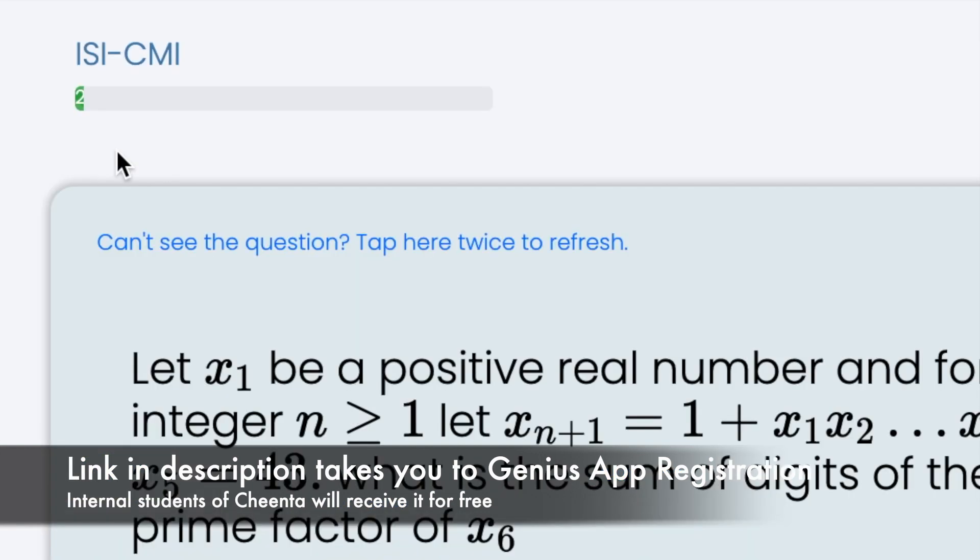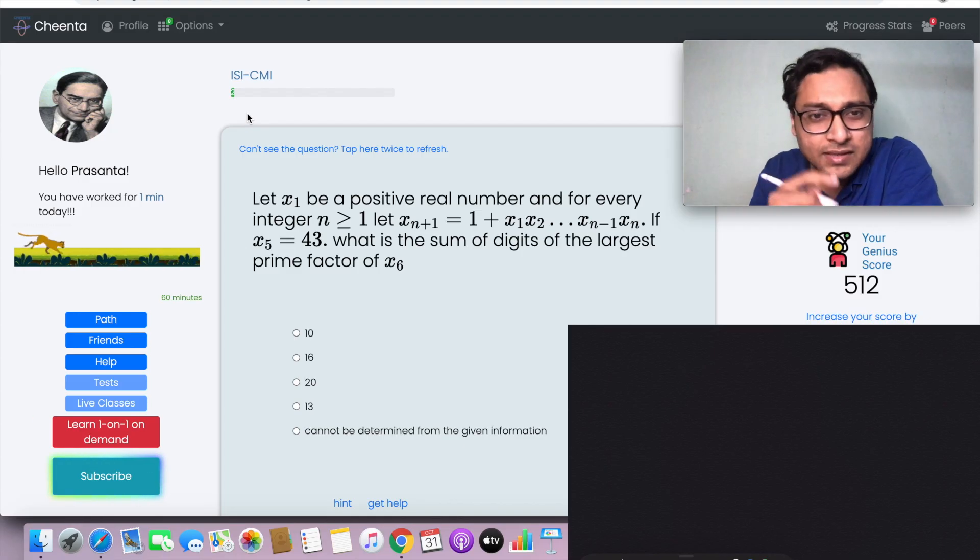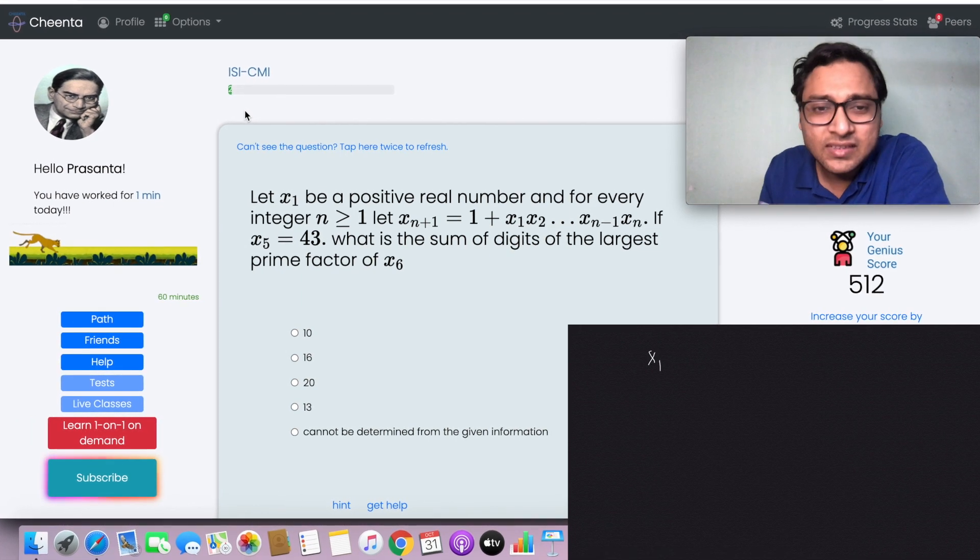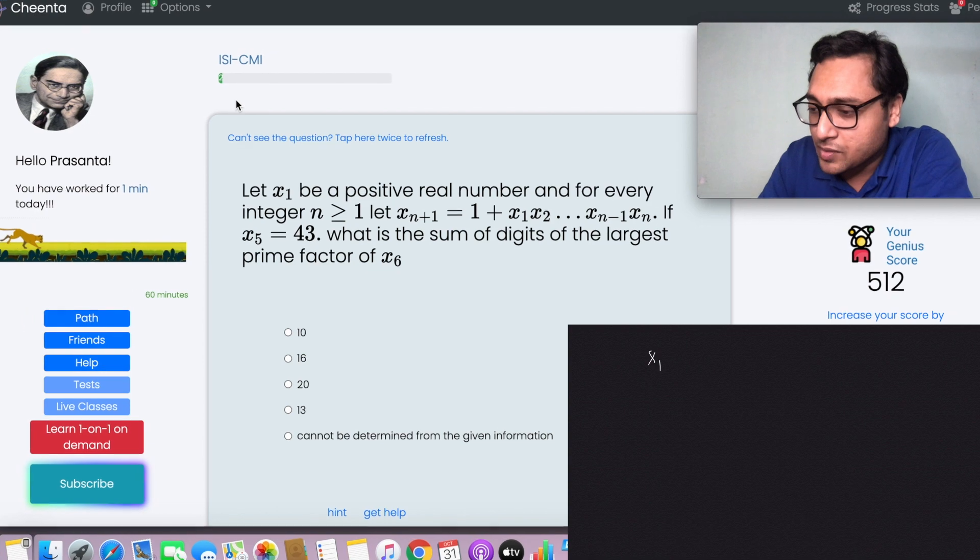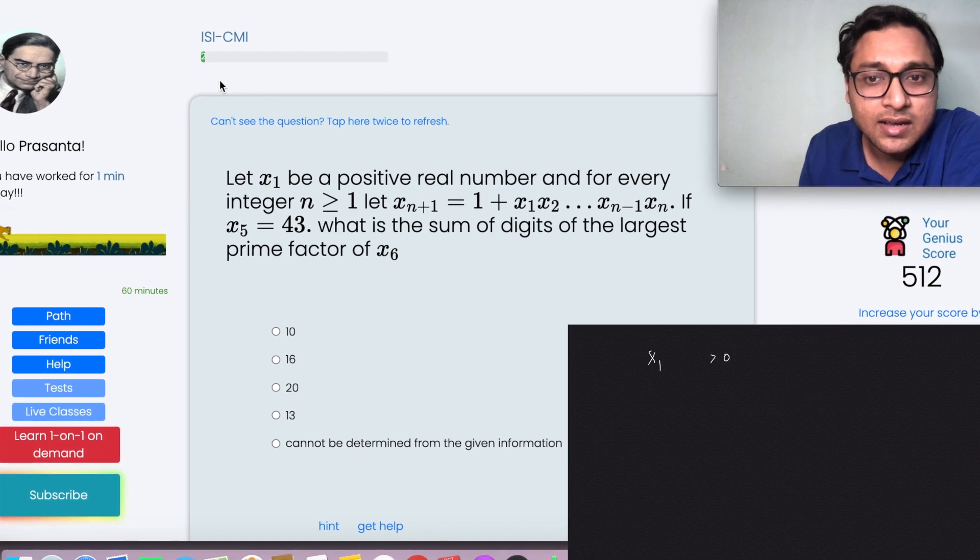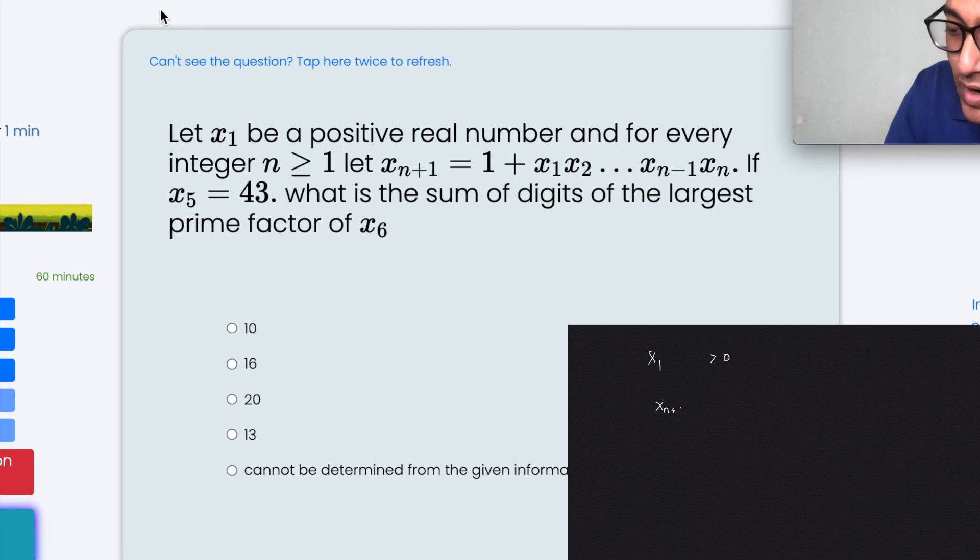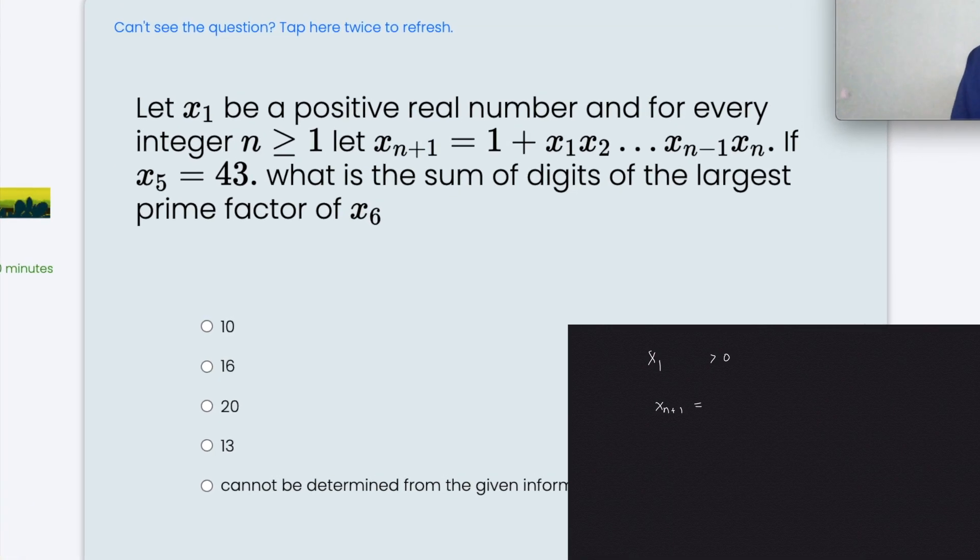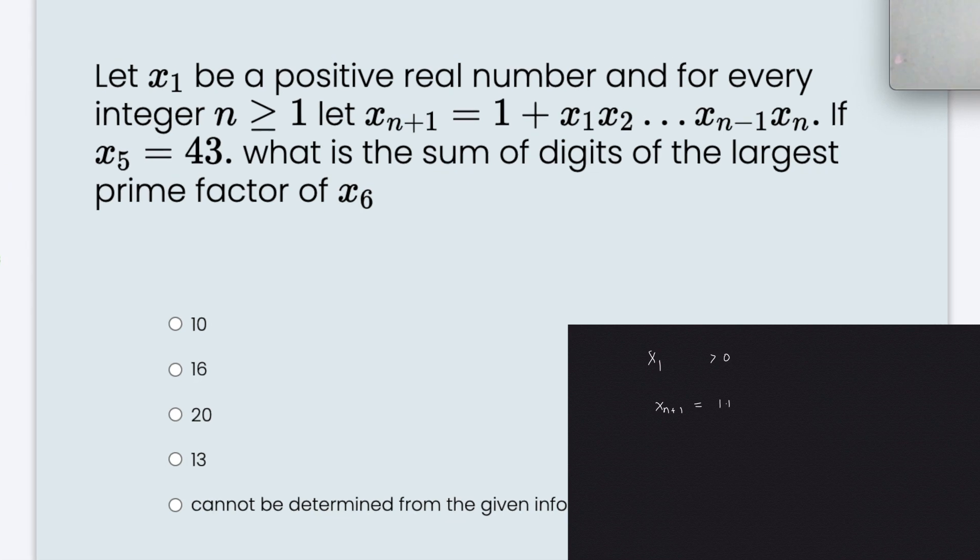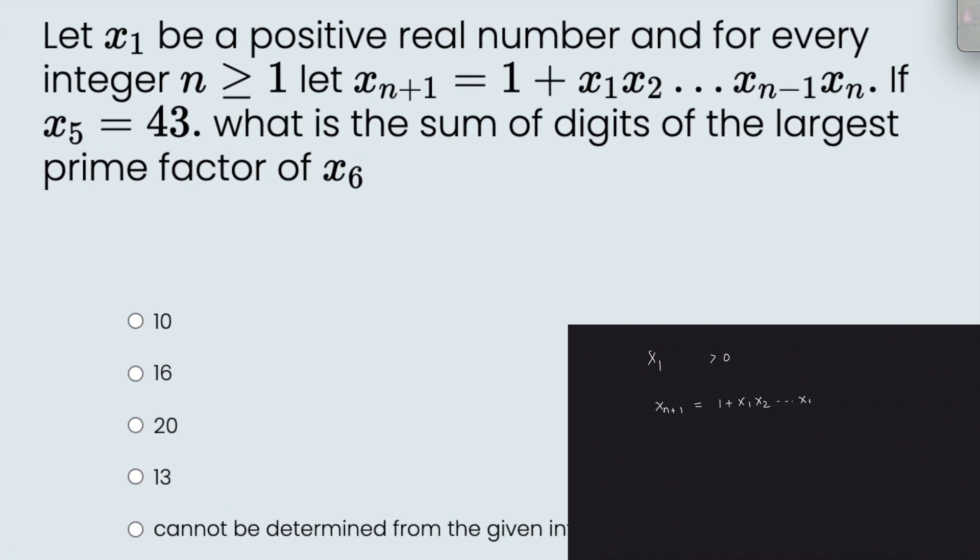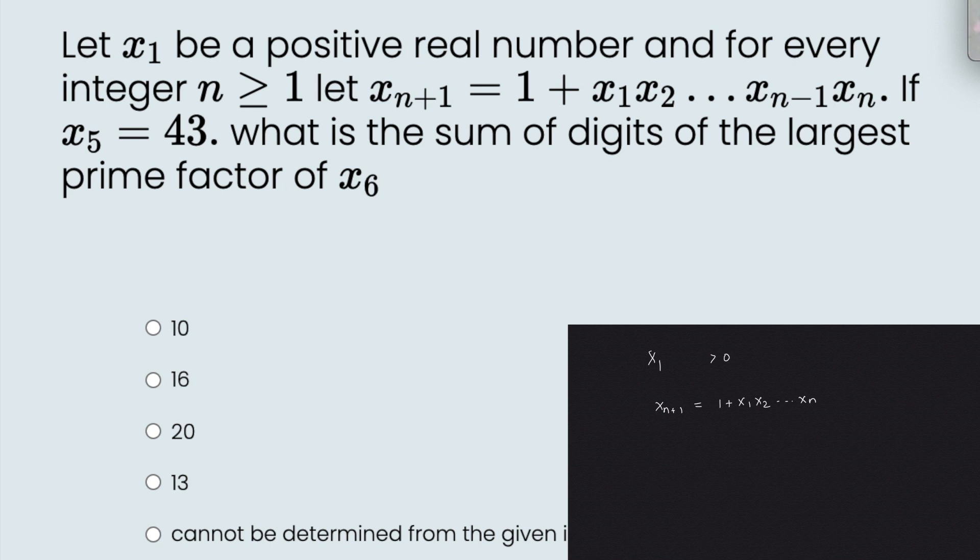So this particular problem says that x1 is a positive real number greater than 0, and for every integer n greater than or equal to 1, x(n+1) equals 1 plus x1·x2·...·xn. Now it's given that x5 is 43.